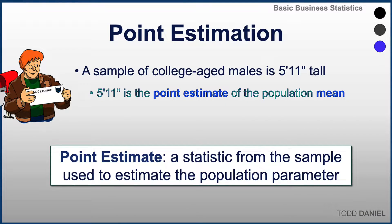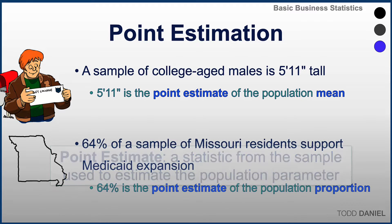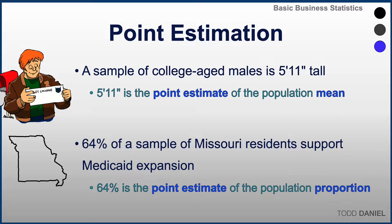For example, a sample of college-aged males is 5 feet 11 inches tall on average. 5 foot 11 is the point estimate for the population mean. If you are asked the average height of all college-aged males, this point estimate is going to be your best guess. The point estimate is a statistic from the sample that is used to estimate a parameter in the population. Point estimation also works for proportions: if 64% of a sample of Missouri residents support Medicaid expansion, then 64% is the point estimate of the population proportion.